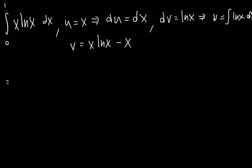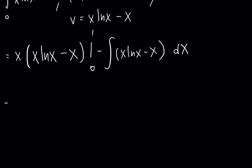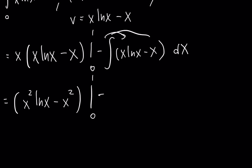So we use the integration by parts formula: uv, so x times (x ln x minus x), evaluated from 0 to 1, minus the integral of v du, which is the integral of (x ln x minus x) dx. This becomes x squared ln x minus x squared, evaluated from 0 to 1, minus the integral from 0 to 1 of x ln x, plus the integral from 0 to 1 of x dx.